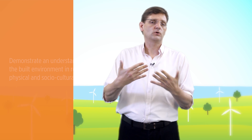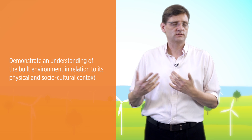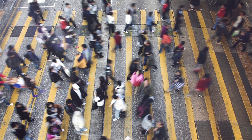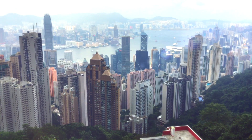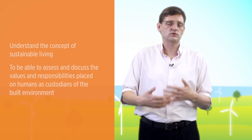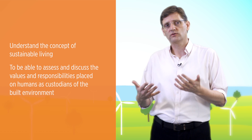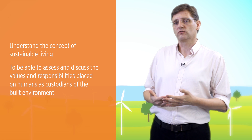This course has a number of learning outcomes, things that I want you to be able to know or to do at the end of the course. The first is I want you to be able to demonstrate an understanding of the built environment in relation to its physical and socio-cultural context and to be able to develop and articulate ideas about the relationship between man and his environment. I also want you to be able to show that you understand the concept of sustainable living and to be able to assess and discuss the values and responsibilities placed on humans as custodians of the built environment.